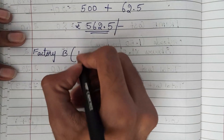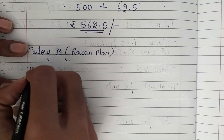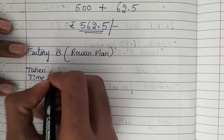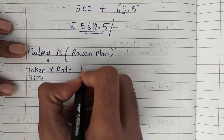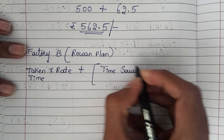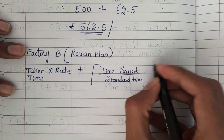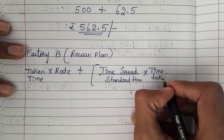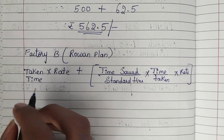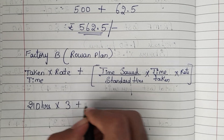Now for factory B, which is following the Rowan plan. The Rowan plan formula is: time taken multiplied by rate, plus time saved divided by standard time, multiplied by time taken, multiplied by rate. The time taken in factory B is 210 hours and the rate is 3 rupees.